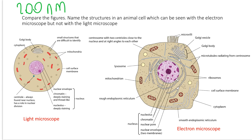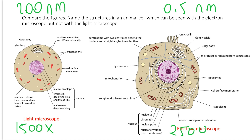The maximum resolution of a light microscope is 200 nanometers, because it uses visible light radiation. In an electron microscope it's 0.5 nanometers. The maximum magnification with a light microscope is 1,500 times, and 250,000 times with an electron microscope. Due to these differences, the parts visible with each microscope are totally different.